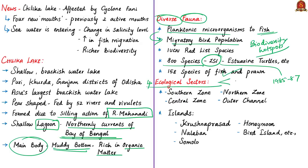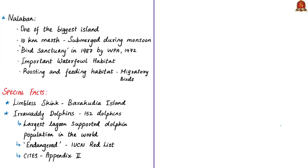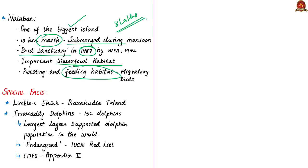The lagoon can be broadly divided into four ecological sectors based on salinity and depth: the southern zone, central zone, northern zone and the outer channel. A number of islands are present in the lagoon, prominent ones being Krishna Prasad, Nalabana, Kalijai, Somolo, Honeymoon, Breakfast and Birds Island. Nalabana is one of the biggest islands — a 10-kilometer marsh that is submerged during four or five monsoon months. Nalabana Island was notified as a bird sanctuary in 1987 under the Wildlife Protection Act of 1972. Chilika Lake and the Nalabana area are among the most important waterfowl habitats in India, with the total number of waterfowl close to around 8 lakh.